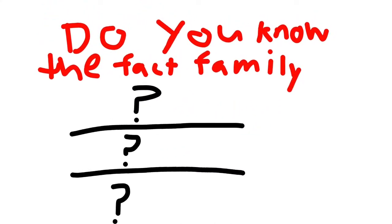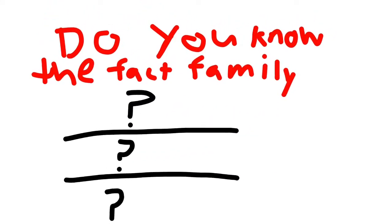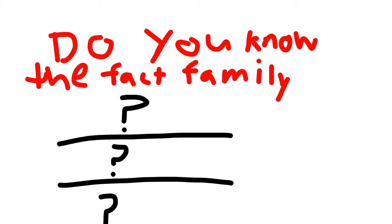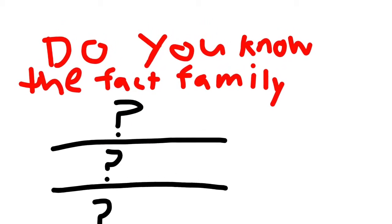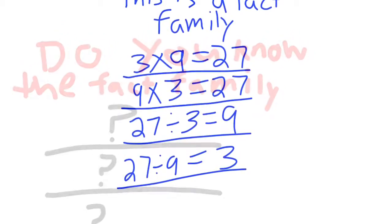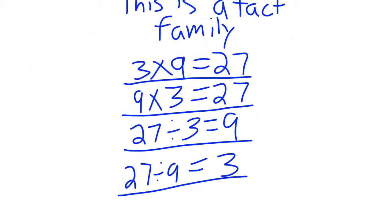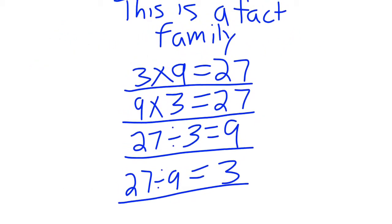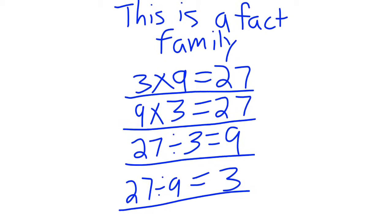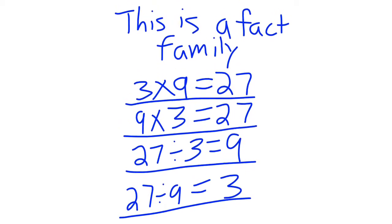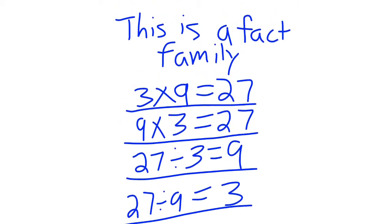Do you know the fact family? Three times nine equals twenty-seven. Nine times three equals twenty-seven. Twenty-seven divided by three equals nine. Twenty-seven divided by nine equals three.